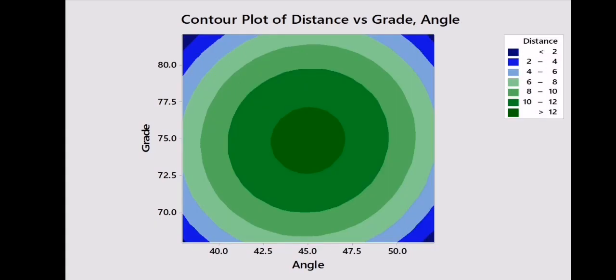And here in this contour plot, we have a peak. So there's an optimum grade of paper, which looks like 75 grams per square metre, and an optimum angle, which is 45. And a departure in any direction takes you down off the summit, takes you away from the peak in the response.